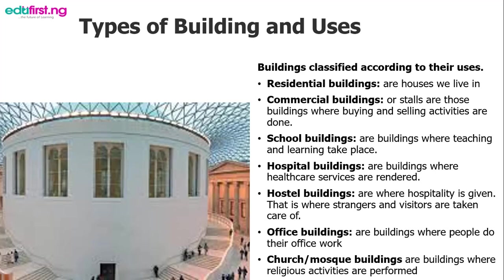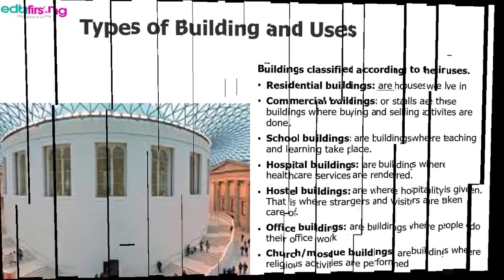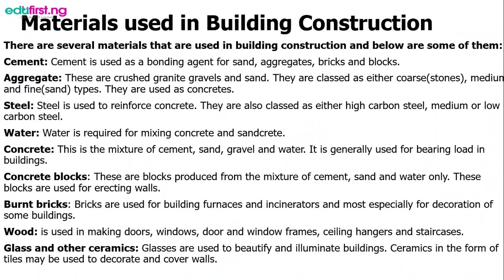Let's move on to the next topic: materials used in building construction. There are several materials used in building construction. Number one is cement — cement is used as a bonding agent for sand, aggregates, bricks and blocks, and it is a fundamental material in building construction. Number two is aggregate — these are crushed granite, gravel and sand, classed as either coarse stone, medium or fine sand type, and they are used in concrete.